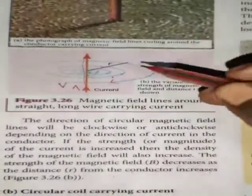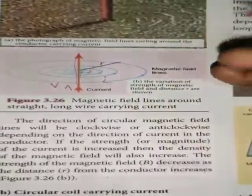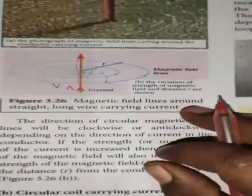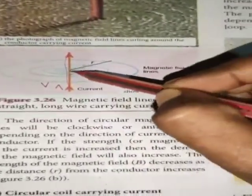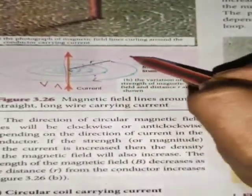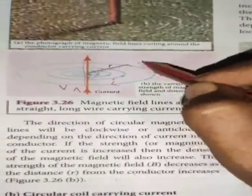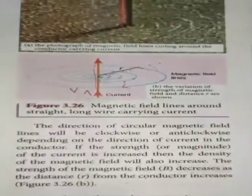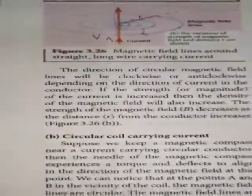The density of the magnetic field increases with increasing current. As distance from the current carrying conductor increases, the magnetic field decreases. This is the behavior of a straight current carrying conductor.